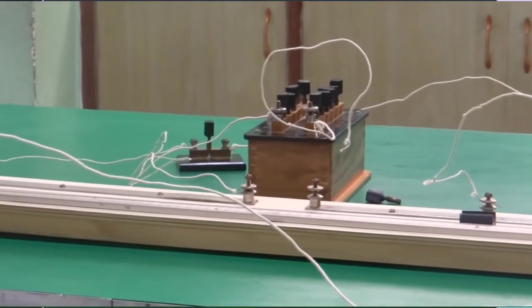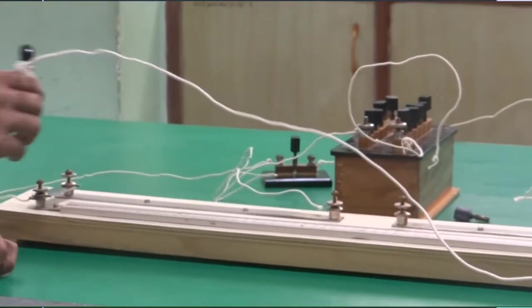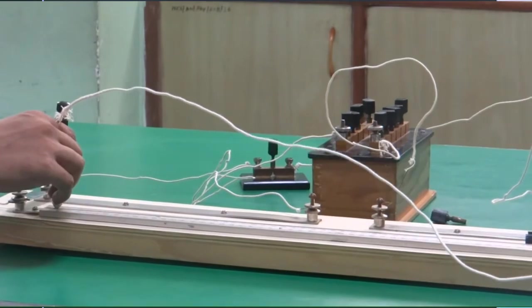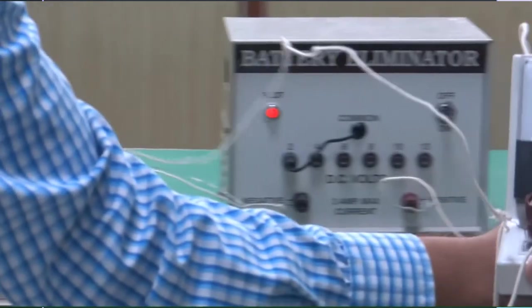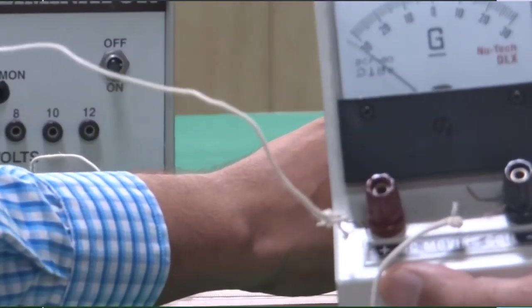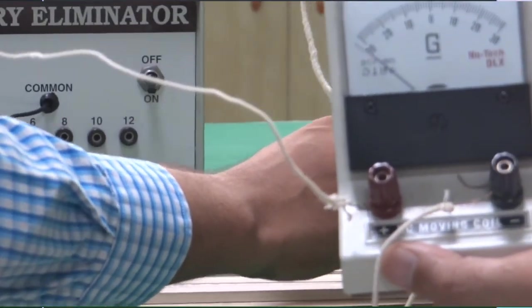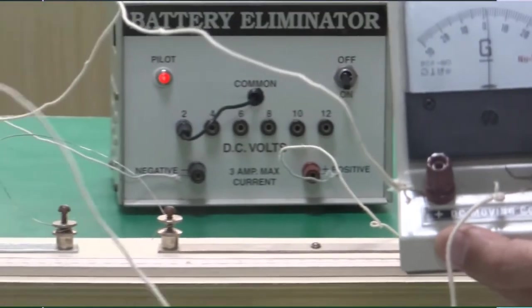First we will check for the deflection or the null point. Place it on one extreme edge. You can see that the deflection is towards the right. And when I place it on the opposite end, the deflection is towards the left. It means that the deflection point would be somewhere in between.